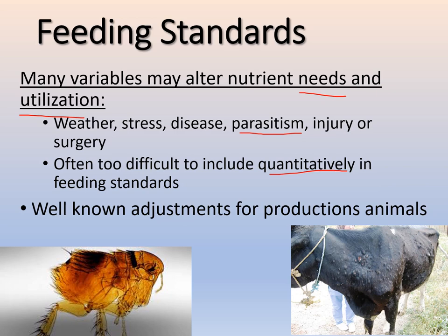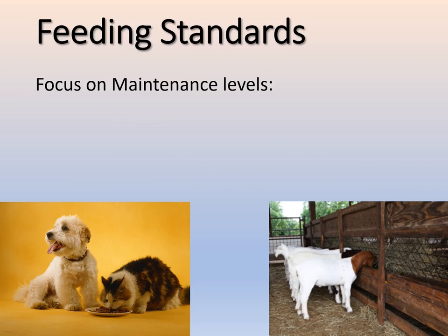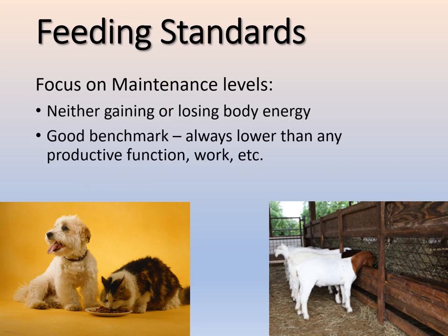For production animals, there are well-known adjustments for when and how much to increase nutrients at different stages of production. Our focus is more on maintenance levels — for domestic and captive species where you want to keep them at their ideal or maintenance weight without gaining or losing body mass. Maintenance levels are always lower than productive or work levels. It's a good starting point, and you can adjust from there.